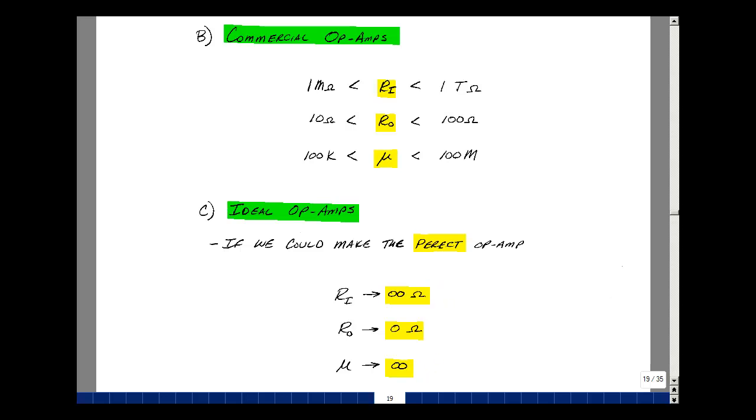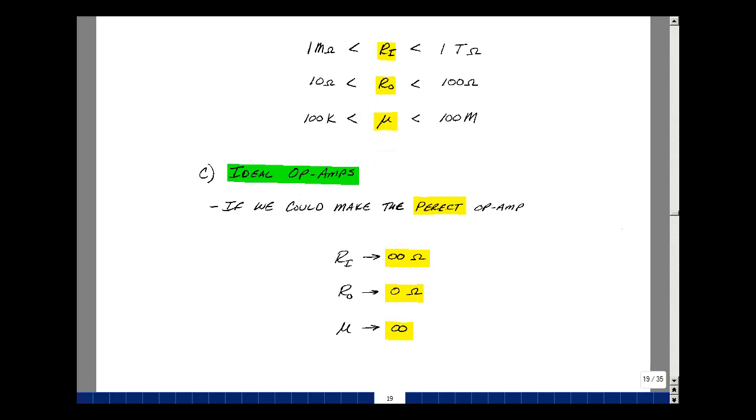So let's define an ideal op-amp with these parameters. We know how to represent zero resistance, that's a short circuit, and infinite resistance, that's an open circuit. But what do you do about infinite gain? Well, let's see how we might handle this.